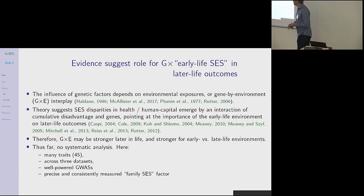Then there's also evidence that suggests that there might be a role for a gene by early life socioeconomic status interactions in later life outcome. The influence of genetic factors is believed to depend on environmental exposures or gene by environment interplay. So G by E may be stronger basically later in life and stronger for early versus late life environments.